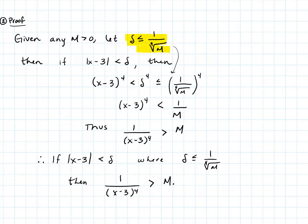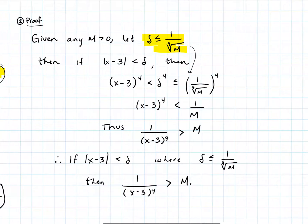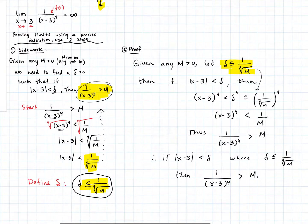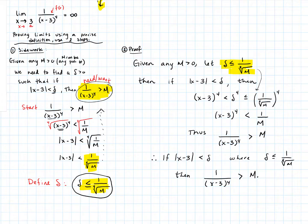It doesn't matter what M is — M can be five billion, 27 trillion — as long as I let delta be 1 over the fourth root of M, I can find a neighborhood, a very small delta neighborhood on the x-axis, such that as long as the points are in that neighborhood, the function will be greater than any given M. That is the process: do the side work, starting with what you want and working to define delta, then write up the clean proof. Do the side work first, then write up the nice proof.